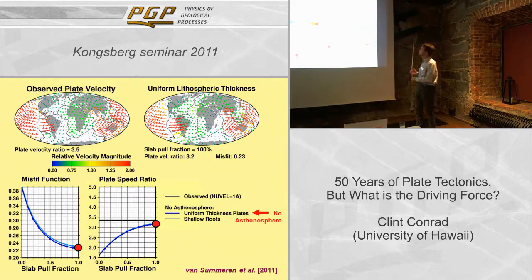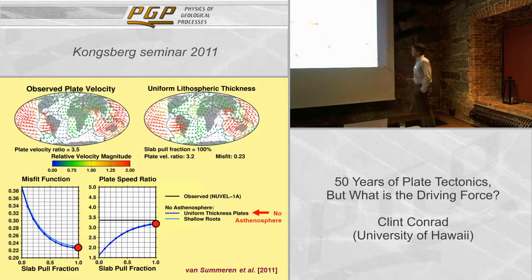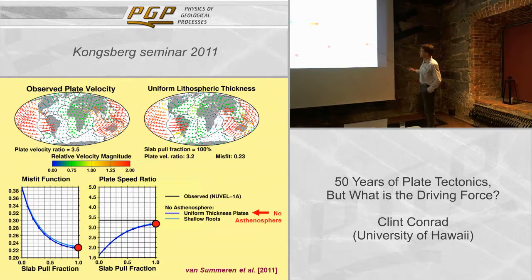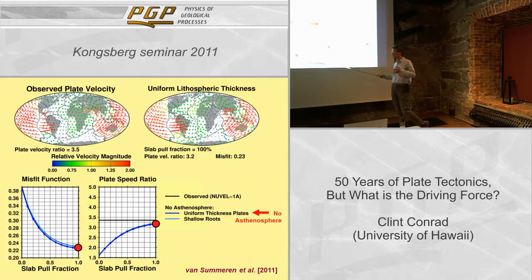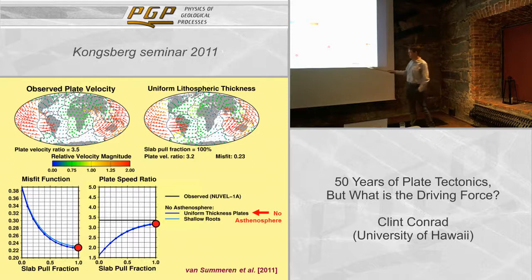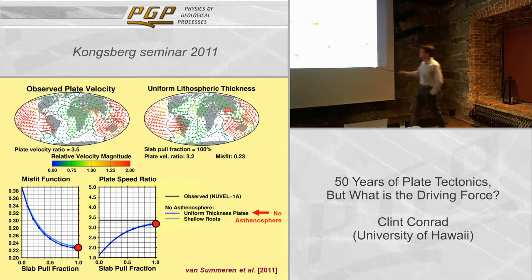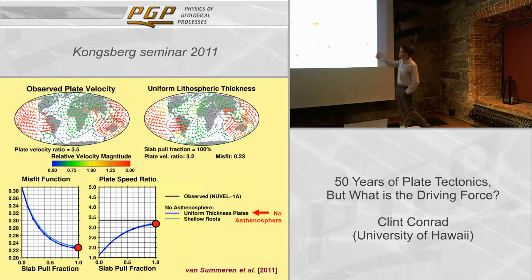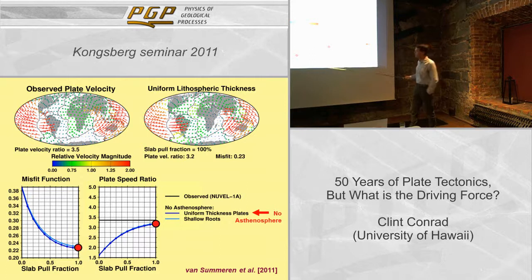Here is our observed plate velocity set with the plate velocity ratio of 3.5 — that's what we're trying to reproduce. I'm doing a case with uniform lithospheric thickness, varying the amount of slab pull along the axis. On the left, slabs are detached from the plates; on the right, the full estimated slab pull force is applied. With no asthenosphere and uniform thickness plates, you need essentially the entire slab pull force — about 100% — to get close to this ratio of subducting to non-subducting plate speeds. This is what we found in our 2002 paper.